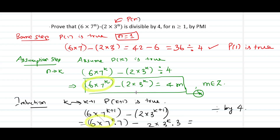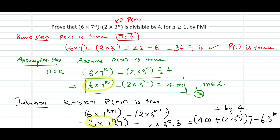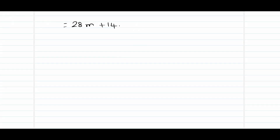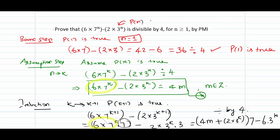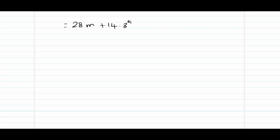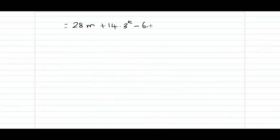The quantity 6 into 7 power k is replaced as 4m plus 2 into 3 power k from our assumption. Don't forget there is a product of 7 here, so the entire quantity is multiplied by 7, minus 2 times 3 times 3 power k, which is 6 into 3 power k remaining from the last stage. Expanding gives 7 times 4m, which is 28m, plus 7 times 2 into 3 power k, which is 14 into 3 power k, minus 6 into 3 power k.